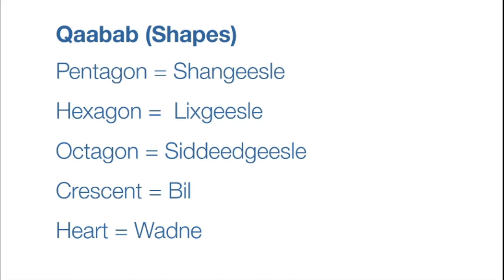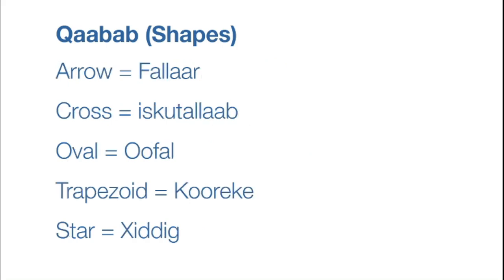Crescent is bil. Heart is wadne. Arrow is fallar. Cross is iskutallab.